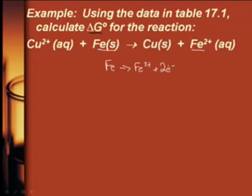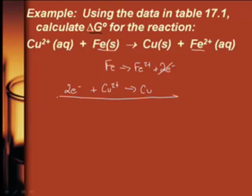I do not have to play any nasty games like oxygens and hydrogens. And then the copper 2 positive is going to go to copper, and that will be plus 2 electrons. It's 2 and 2 — the electrons cancel, so N in this case will be 2.